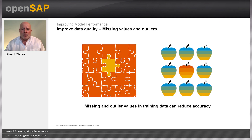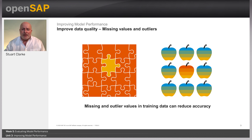The unwanted presence of missing and outlier values in the training data often reduces the accuracy of a model or leads to a biased model with inaccurate predictions. In a multivariate model, missing values and outliers will cause the behavior and relationship with other variables to be analyzed incorrectly, so it's important to treat missing and outlier values before building a model.